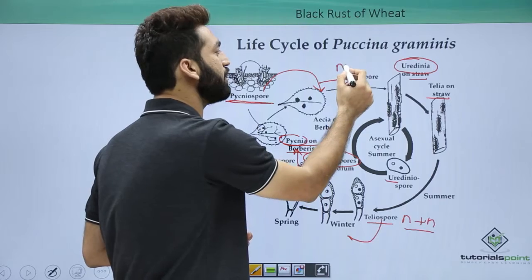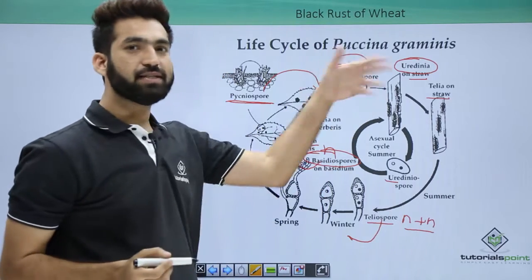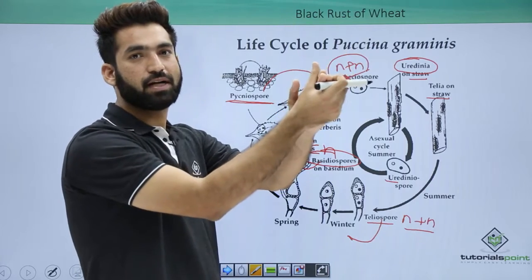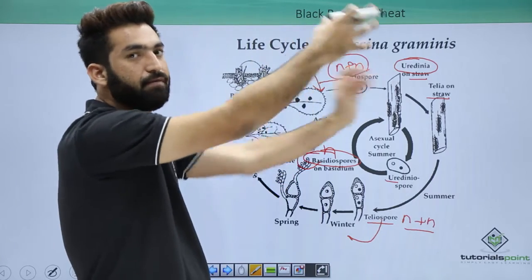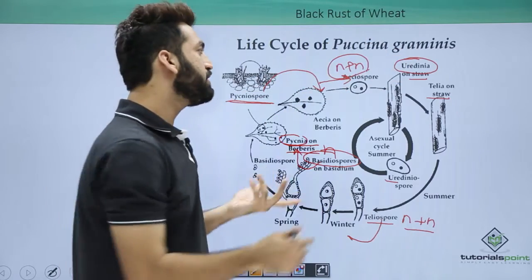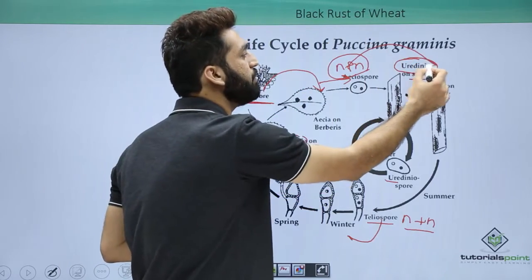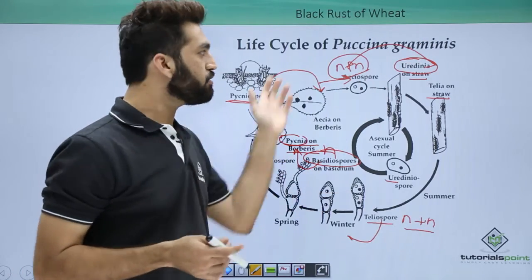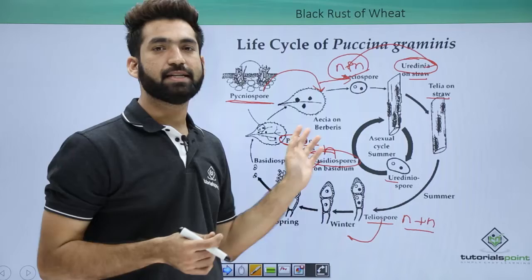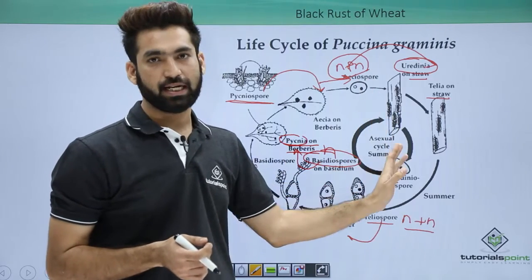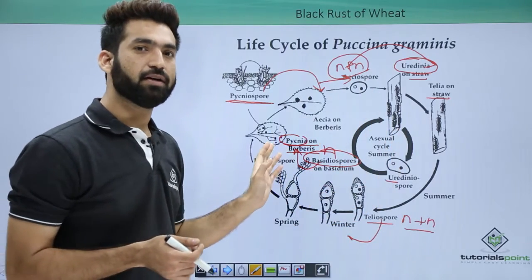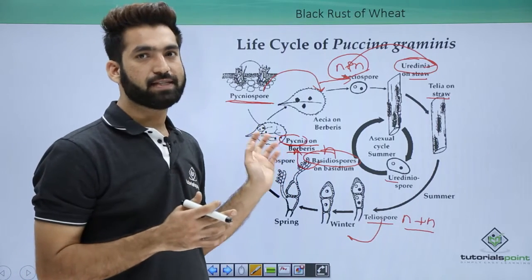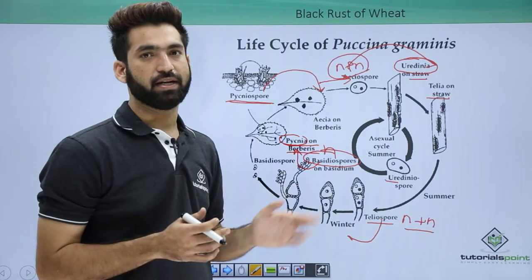The pycniospores move to the lower surface of the Barberry leaves, forming aeciospores. Aeciospores are again in the dikaryotic stage. During this dikaryotic stage, when wheat starts growing, the aeciospores will wait on Barberry leaves until wheat is available. Once wheat grows, the aeciospores go onto the wheat and are converted into urediniospores or teliospores. This is how Puccinia infects wheat, and when wheat is not there, Puccinia finds the alternate host Barberry to complete its life cycle.